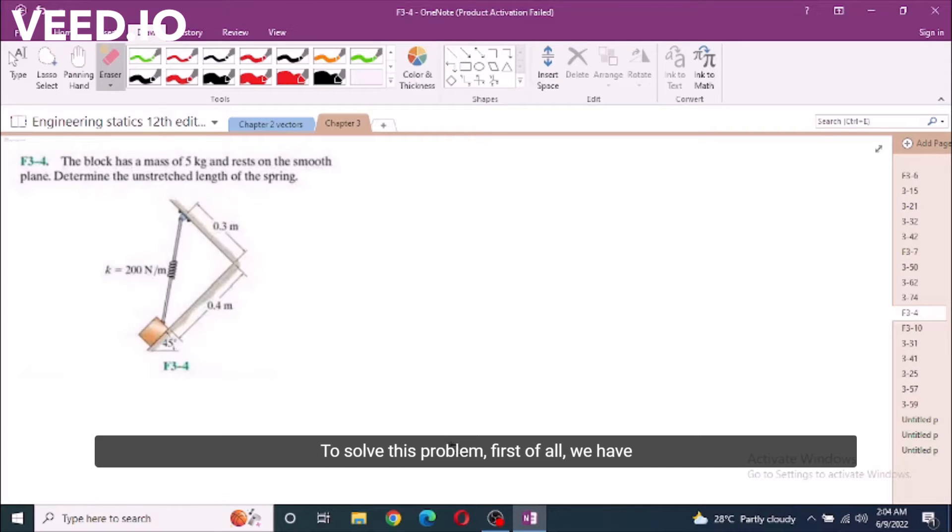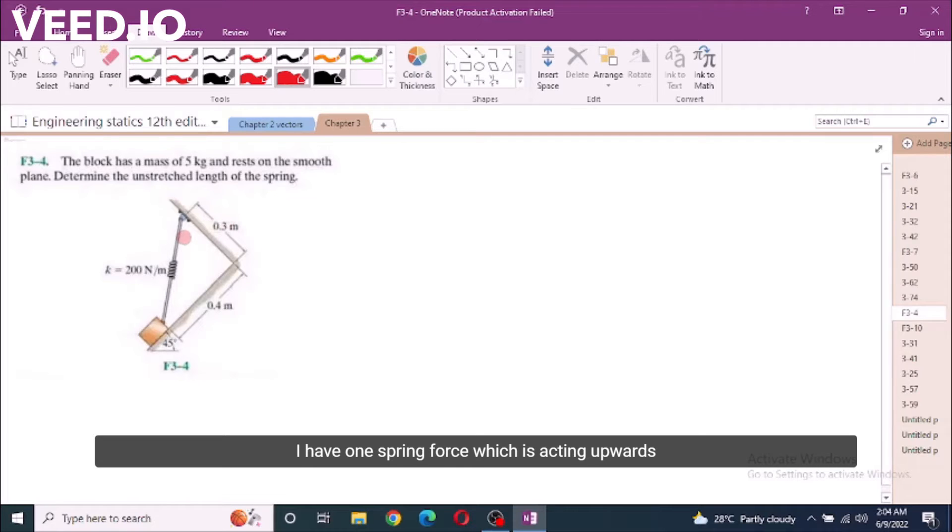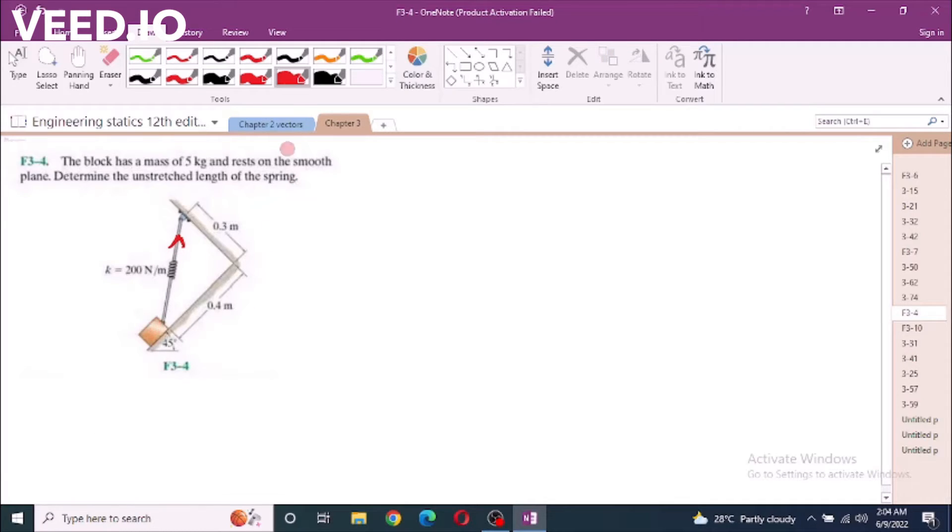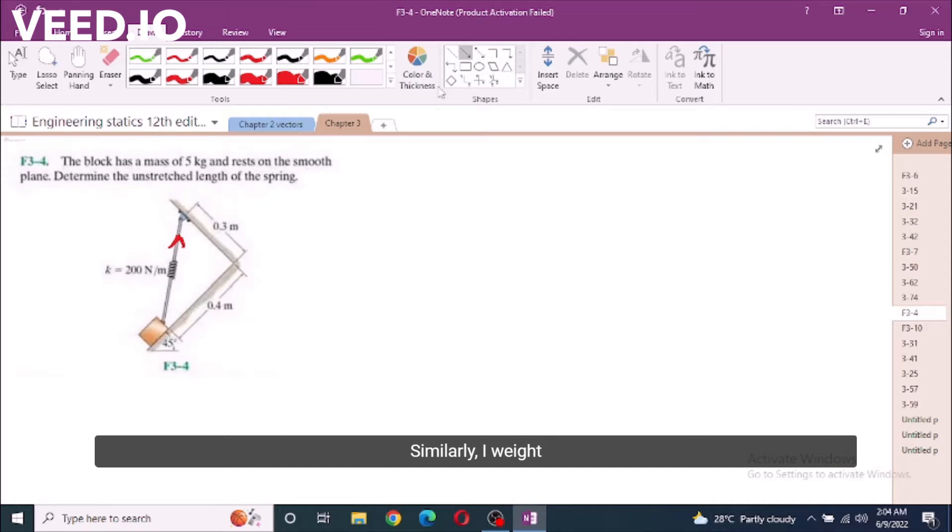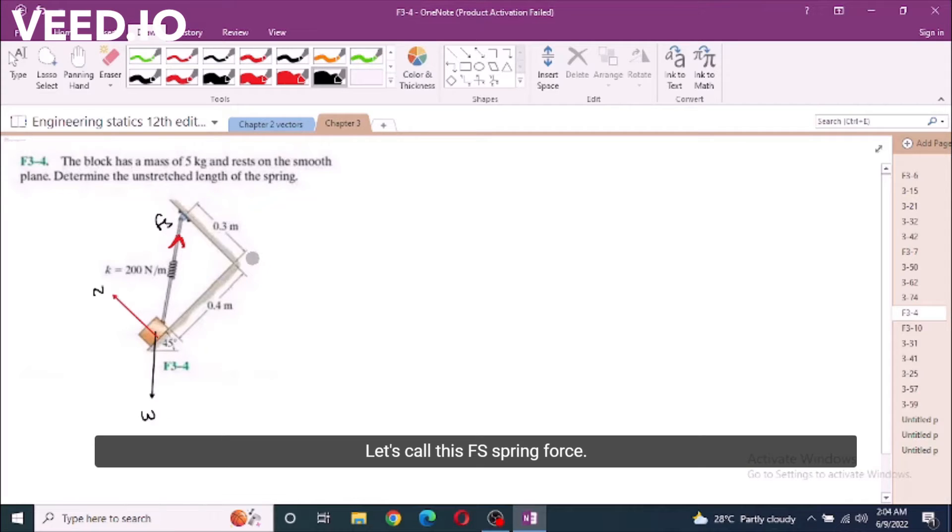To solve this problem, first of all, we have to mark all the forces in the system. I have one spring force acting upwards because the weight is downwards. Similarly, I have the weight of the block which is acting downwards. Also, I have one reactional force from the contacting surface. Let's call this N, the weight, let's call this Fs, spring force.